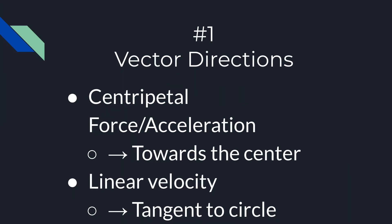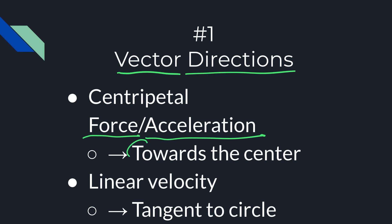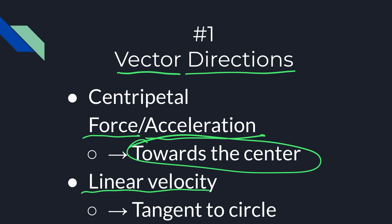The number one thing you're going to be expected to know is to determine vector directions for three things: centripetal force, centripetal acceleration — which are both always towards the center — and then linear velocity, which will always be tangent to the circle.